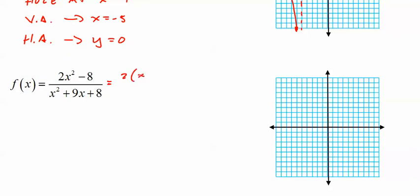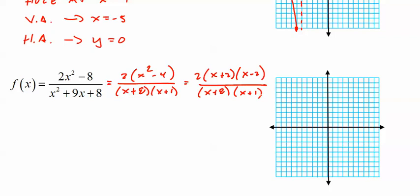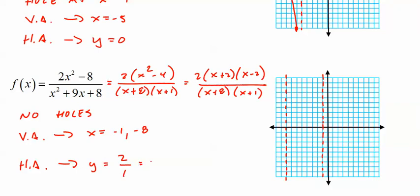So this one looks a little complicated, factor out a 2 first, factor the bottom. So I factor the heck out of it and it doesn't cancel. Nothing cancels, so no holes. We have vertical asymptotes, two of them this time: x equals negative 1 and negative 8. And power on the top is 2 and the coefficient's 2, power on the bottom is 2, so we have a horizontal asymptote at y equals 2 over 1, equals 2.